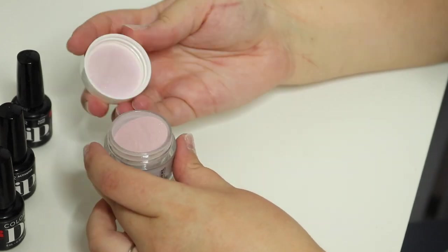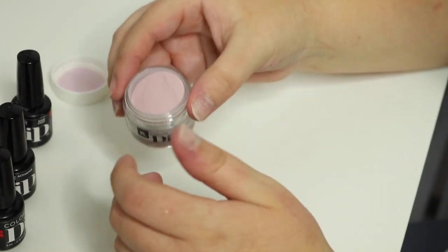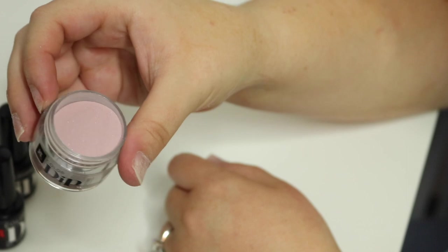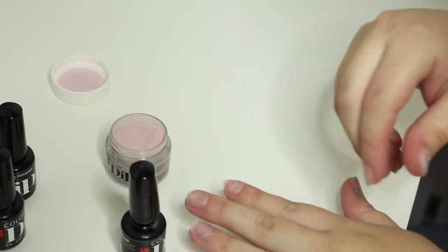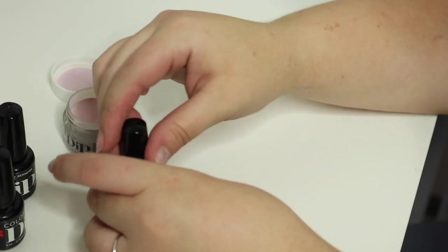So now that we're all filed down, I'll go ahead and open up the color. This is what the powder looks like. It's very fine. This does have a little bit of a shimmer in it. So to start, you're just going to want to take the base coat.